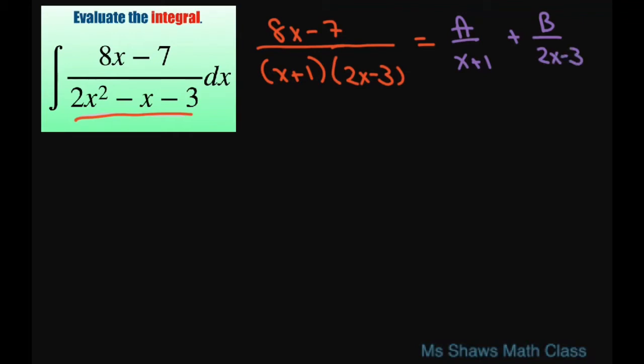Now, you clear the fractions by cross multiplying. You're going to get A times 2x minus 3 plus B times x plus 1 equals this numerator, 8x minus 7.